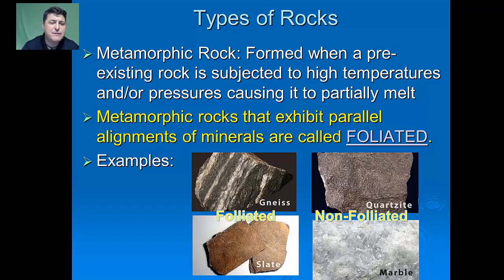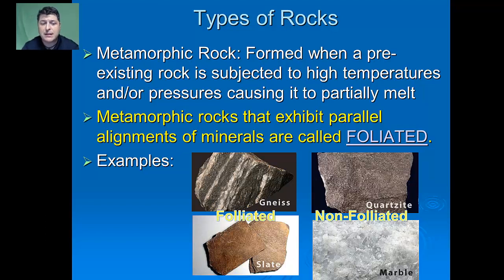Some examples of foliated rocks would be gneiss and slate, whereas non-foliated examples would be quartzite and marble.